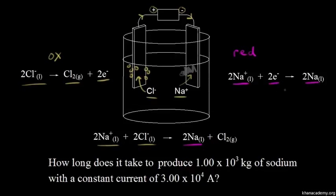This is an important reaction in industry — it's a good way to form sodium metal. How long does it take to produce 1.00×10³ kilograms of sodium with a constant current of 3.00×10⁴ amps?